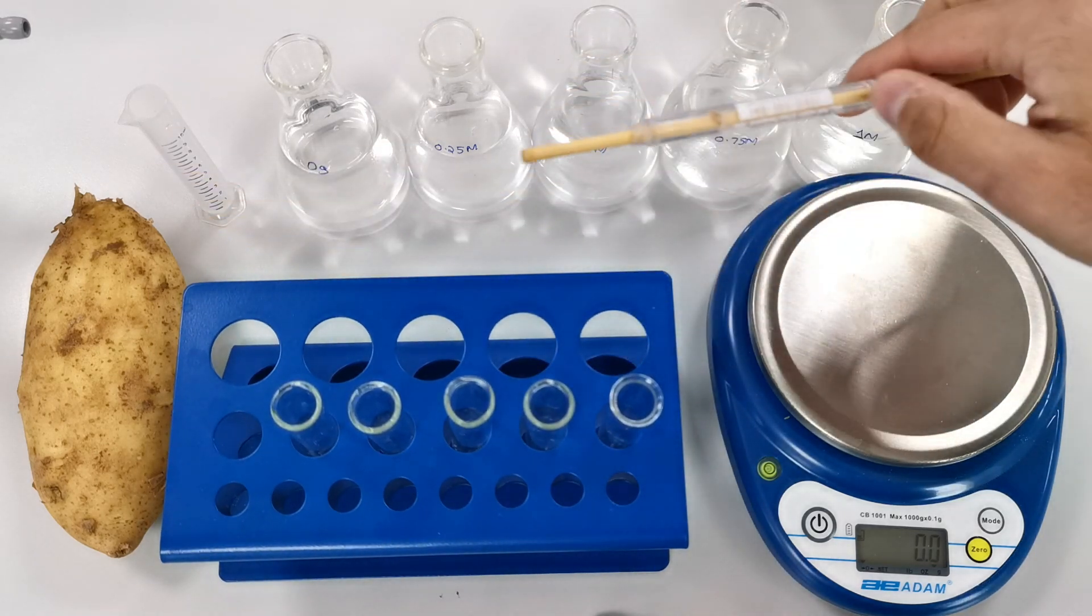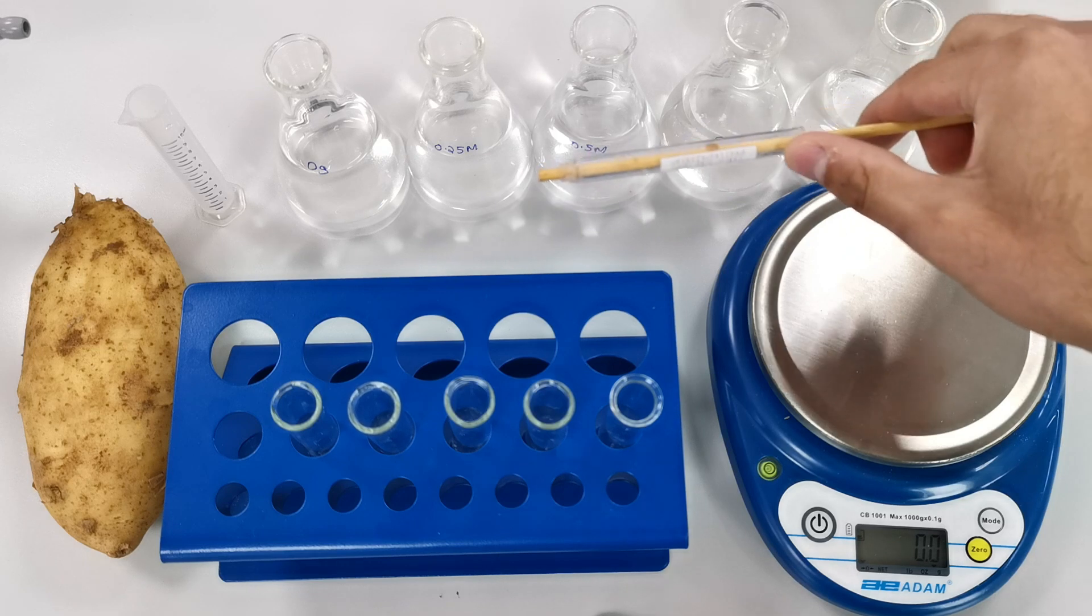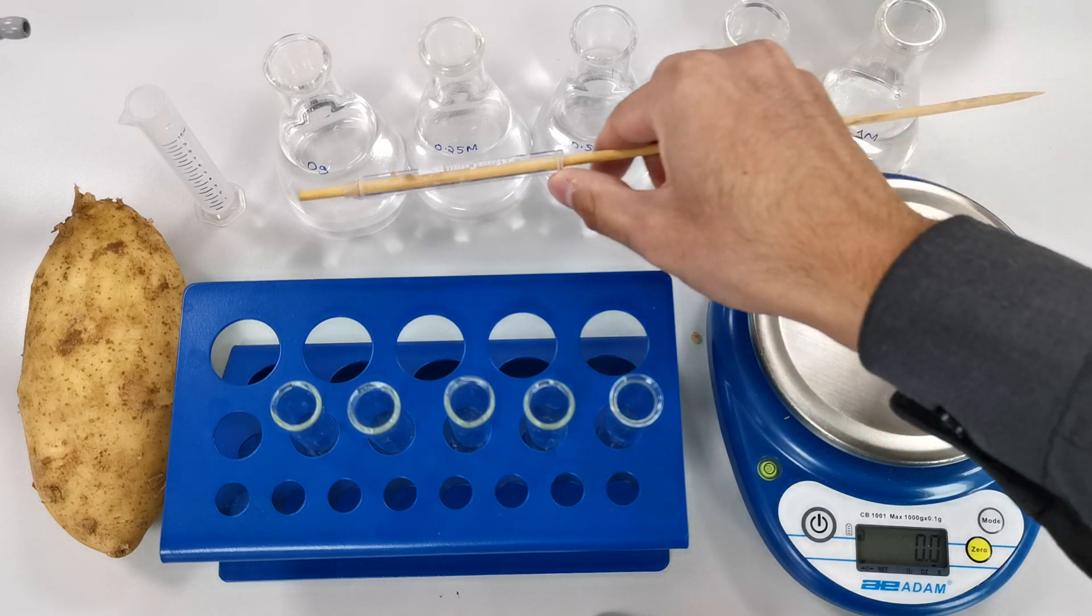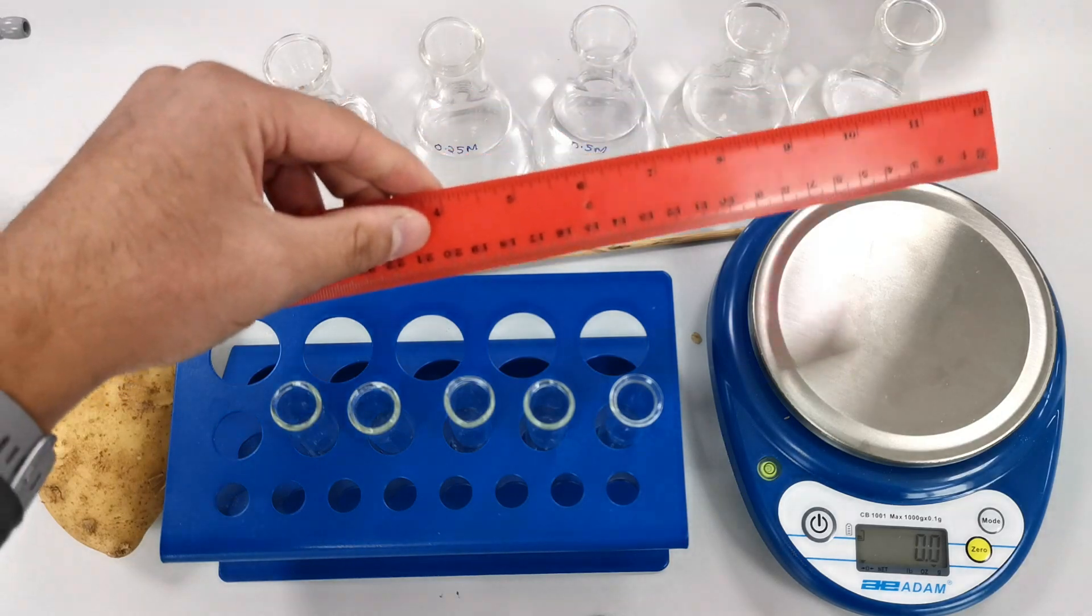In this case I've used a pen and a stick to push through the potato cylinders and you're going to need a ruler.